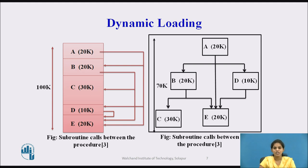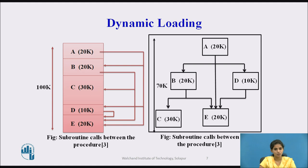Figure 2 shows the subroutine calls and highlights the interdependencies between procedures. Here, procedures B and D are never in use at the same time. Similarly, neither are procedures C and E. But if we load only those procedures that are actually to be used at any particular time, then the amount of core needed is equal to the longest path of the overlay structure. This happens to be 70 KB for the example in Figure 2, covering procedures A, B, and C.